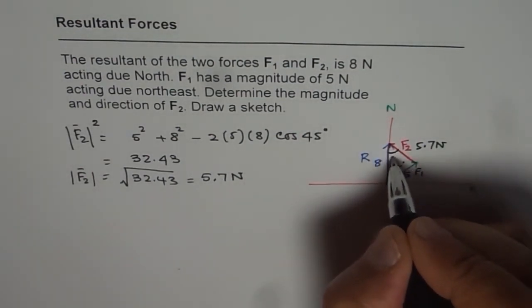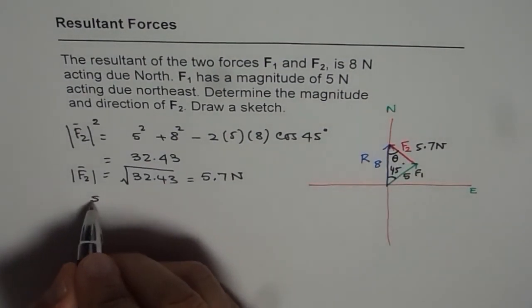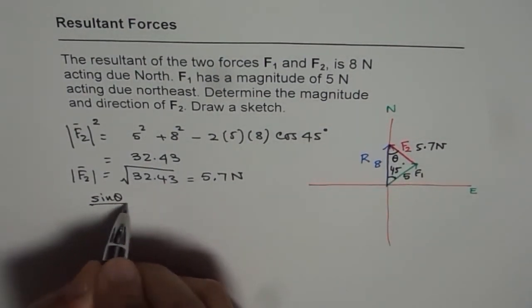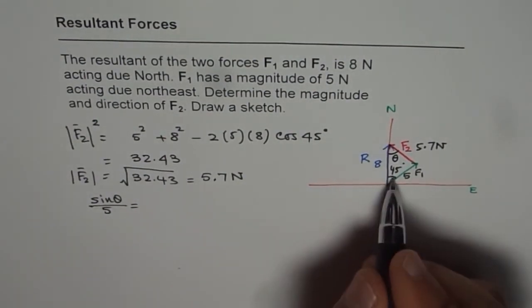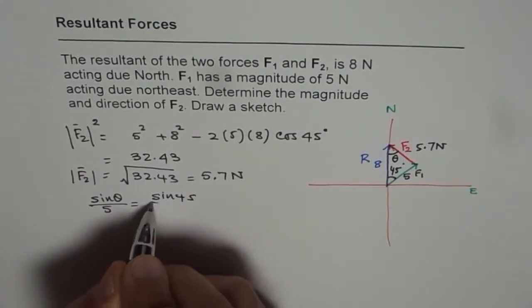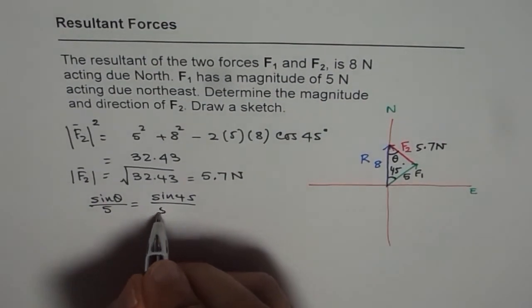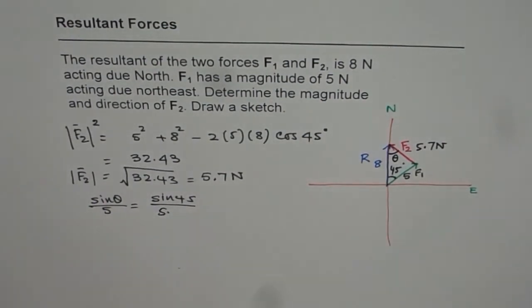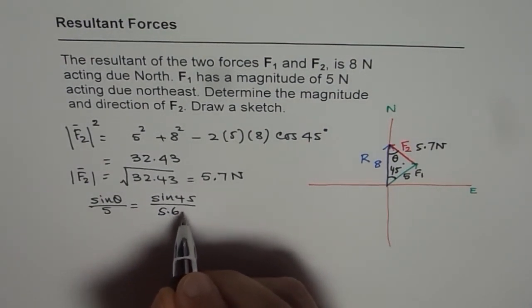Let this angle be angle theta. Now in that case, sine theta over side opposite which is 5 is equal to sine of 45 over the side which we just figured out which is 5 point. It is better to use 4 digits to get accurate answers. So we will use 6948.